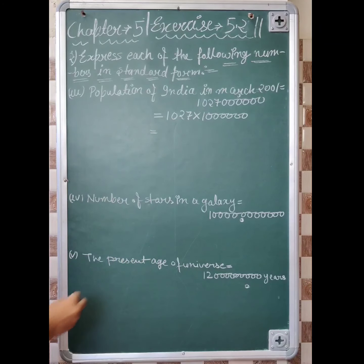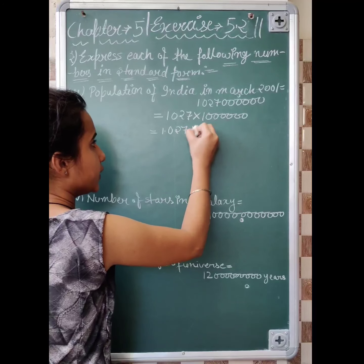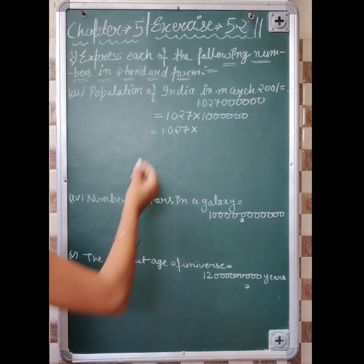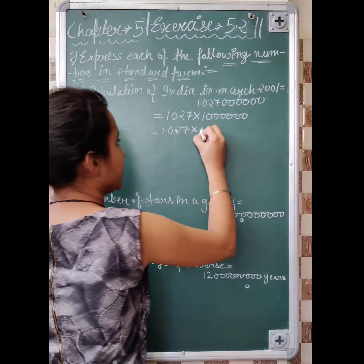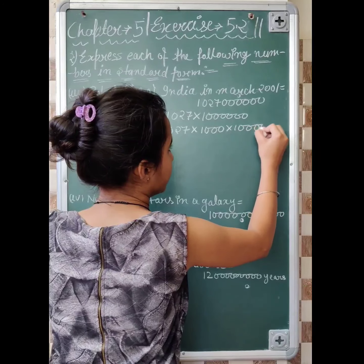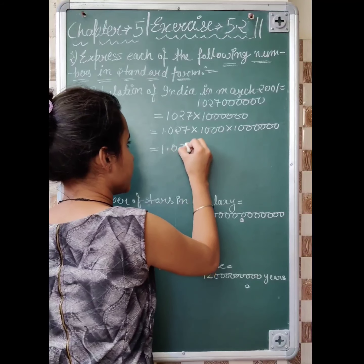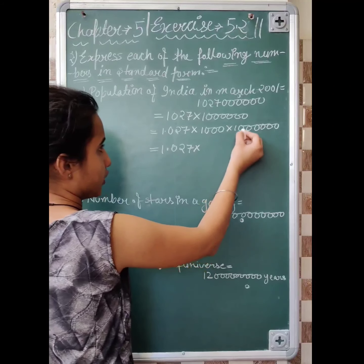Now separate. 1.027 into, now the number of zeros is equal to 1, 2, 3. It means 1, 2, 3 into 1, 2, 3, 4, 5, 6.